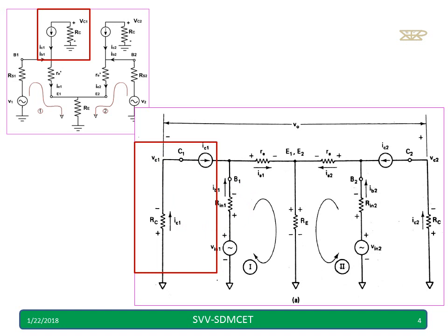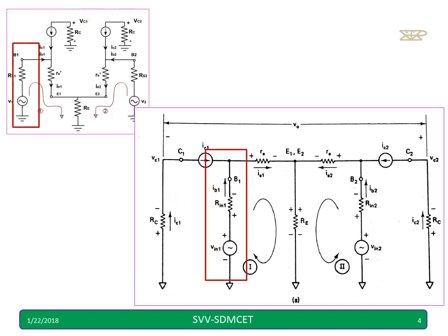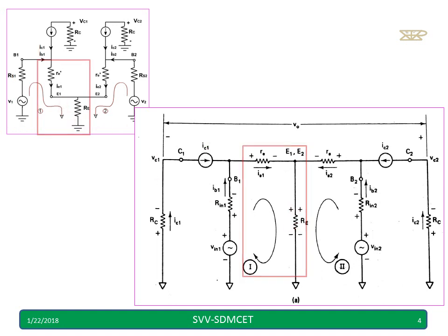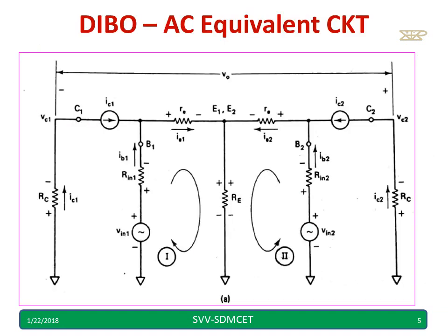Now this is the way we replaced and T model is here. Emitter 1 and emitter 2 joint and re we have, the same re we have. Dual input balanced output AC equivalent circuit is shown in this figure.